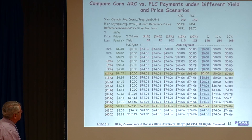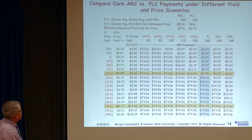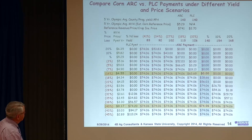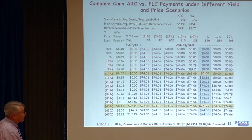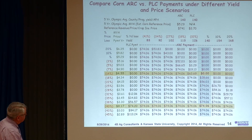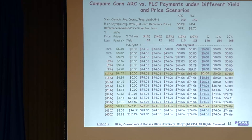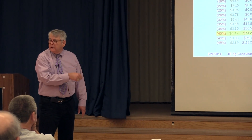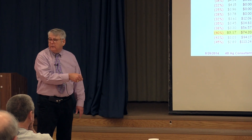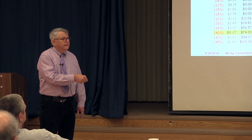There are no measurements made at the farm level for county ARC. For PLC, you have to have a price below $3.70 to trigger a payment. At $3.61, I start getting a payment of $12.06 per base acre because it has to be below $3.70. At $3.45, the payment gets bigger, and at some point you exceed the ARC payment because ARC has stopped out at the 10% stop loss. If the price goes on down, that PLC payment just keeps getting bigger. So if you're really risk averse and you think we're going to have $2 corn, your answer is PLC.